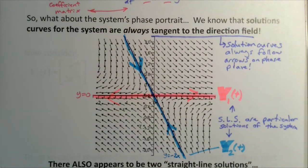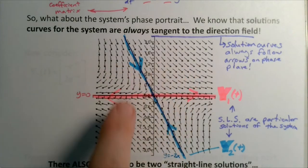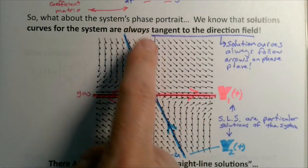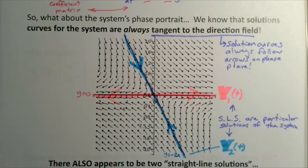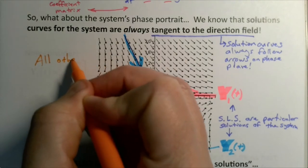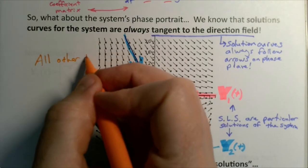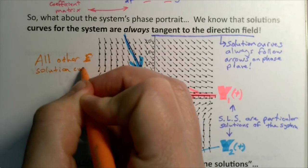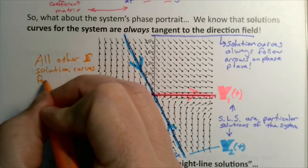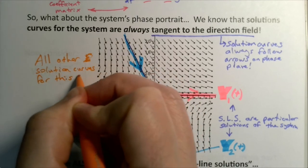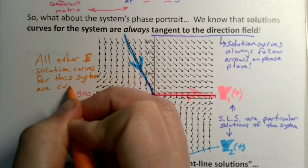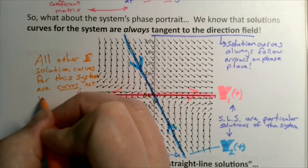The other one down here, you might guess maybe this is something like y equals negative 2x. Those are the lines they appear to be following. But every other solution curve on the phase plane is not a line. Every other solution curve is going to be a curve. All other solution curves for this system are curves, not lines.